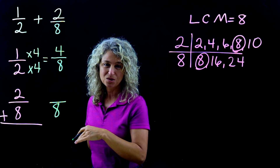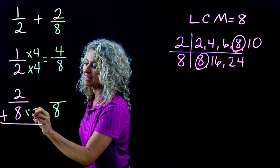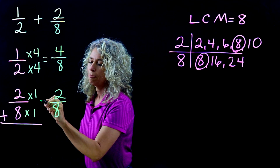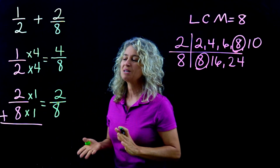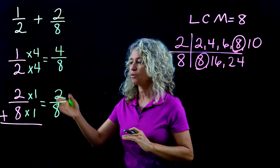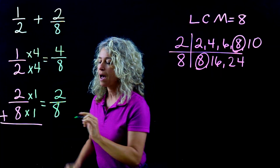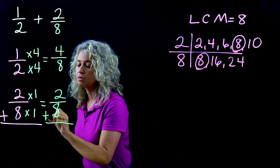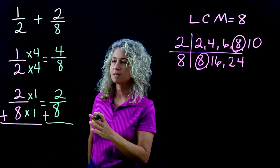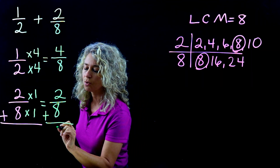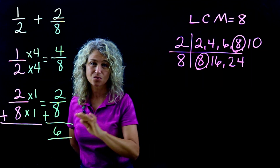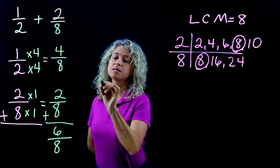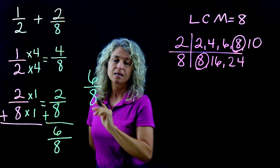Now we've made an equivalent fraction — 1/2 means the same thing as 4/8. For the bottom fraction, how do you get from an 8 to an 8? It's just times 1. So 2 times 1 is 2 — 2/8 stays as 2/8. When you have the same denominator you carry it over. Now the next step is to add. Make sure you're looking at your sign — we add the numerators: 4 plus 2 is 6, and the denominator stays the same.